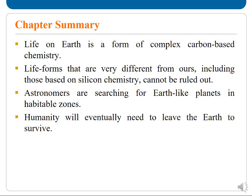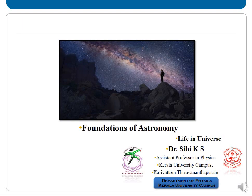In summary: Life on Earth is a form of complex carbon-based chemistry. Life forms very different from ours, including those based on silicon chemistry, cannot be ruled out. Astronomers are searching for Earth-like planets in habitable zones. Humanity will eventually need to leave the Earth to survive. Thank you all for patiently going through the course. Good luck!